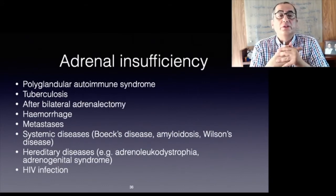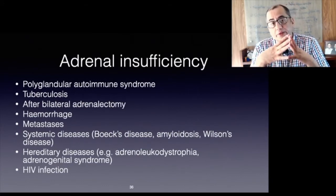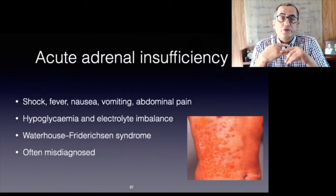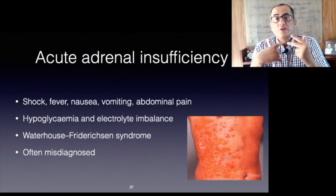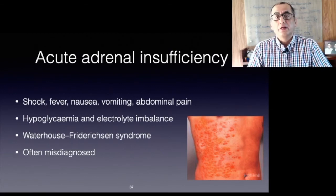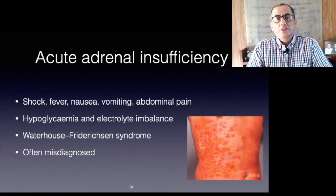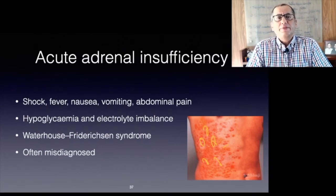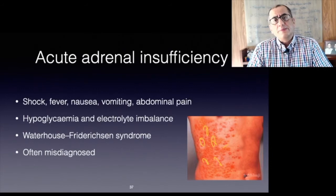These diseases result in destruction of the adrenal glands with resultant insufficiency of adrenal hormones. Acute adrenal insufficiency usually presents as shock in combination with fever, nausea, vomiting, abdominal pain, hypoglycemia, and electrolyte imbalance. The Waterhouse-Friderichsen syndrome is bilateral adrenal infarction associated with meningococcal sepsis, and is rapidly fatal unless immediately treated.